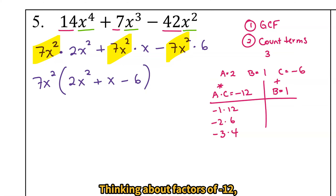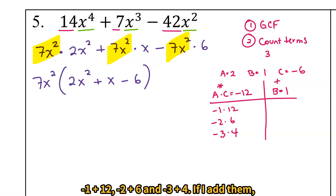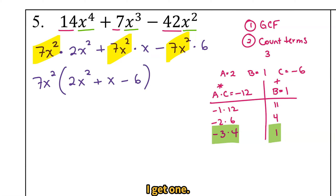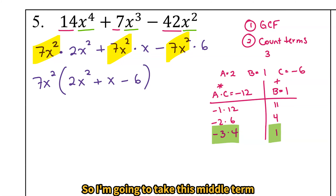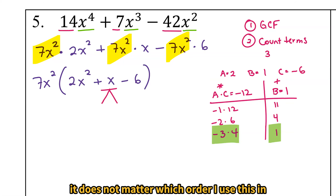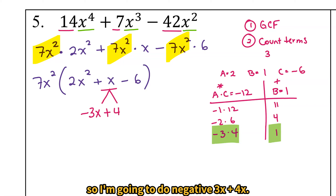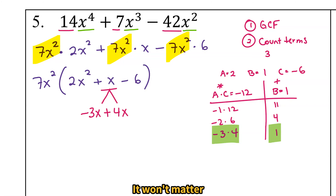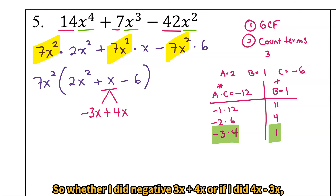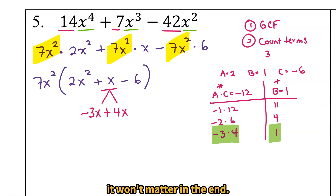Thinking about factors of negative 12: negative 1 and 12, negative 2 and 6, and negative 3 and 4. Negative 3 and 4 wins because when I add them, I get 1. So I'm going to take this middle term x and break it into negative 3x plus 4x. Whether I did negative 3x plus 4x or 4x minus 3x, it won't matter in the end — the intermediate steps will be a little different, but the end result will be the same.